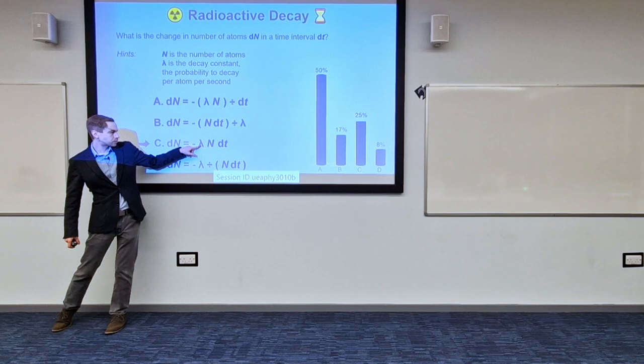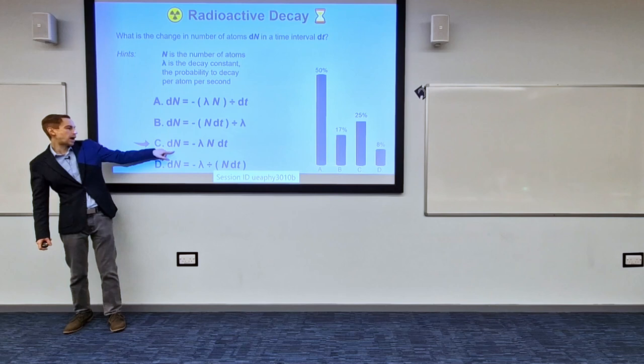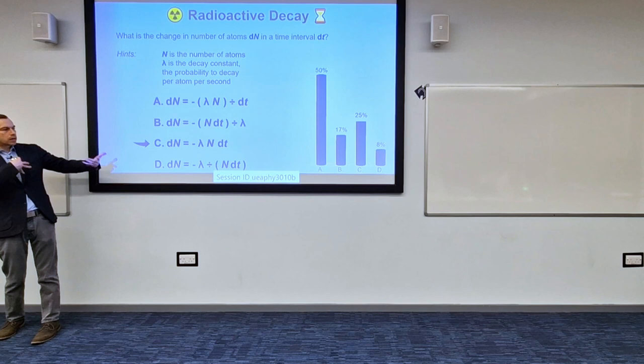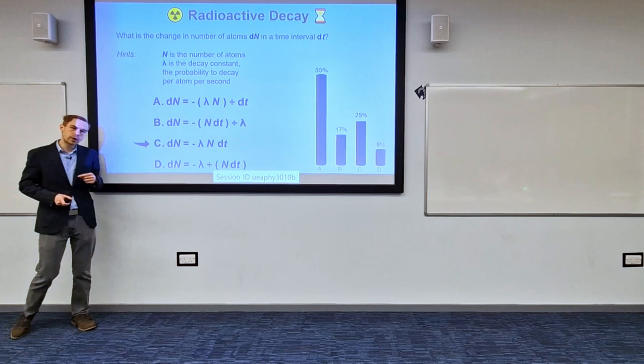Let's unpack what this means. This tells us how many decays we might expect per second, and then dt is just how long we've waited. If we wait longer, more atoms will decay and we'll have a bigger change in N. So the correct answer is option C.